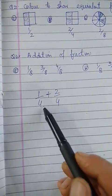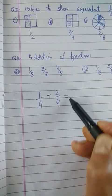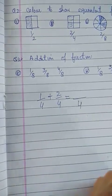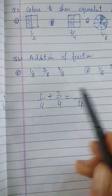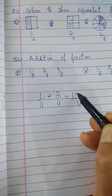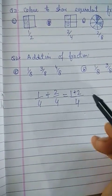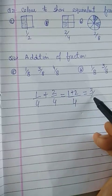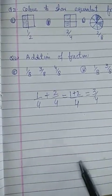For fractions with the same denominator, like 1 by 4 plus 2 by 4, the denominators are common (both 4), so we just add the numerators: 1 plus 2 equals 3 by 4.